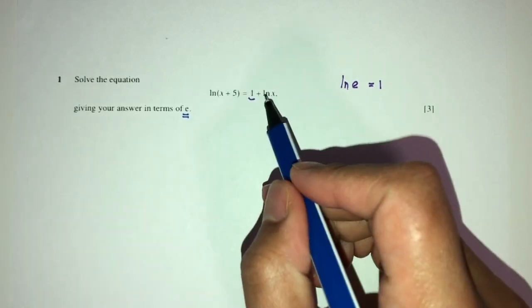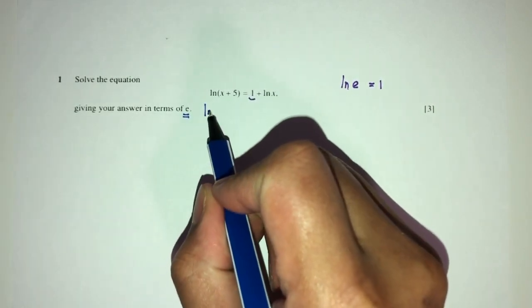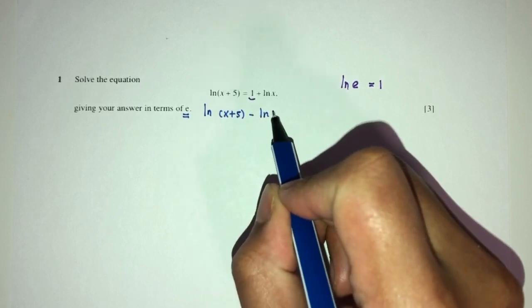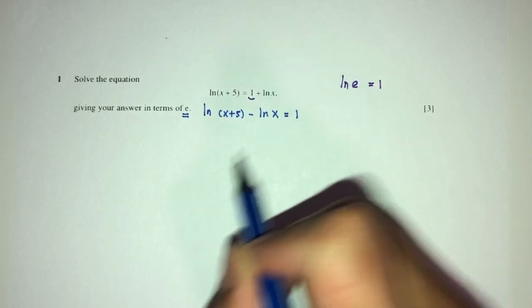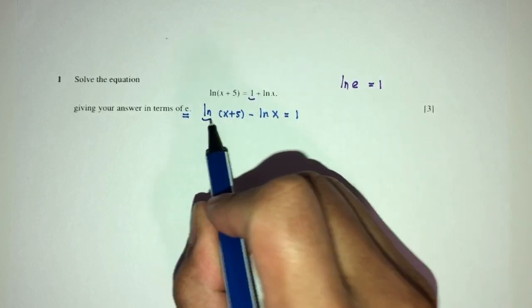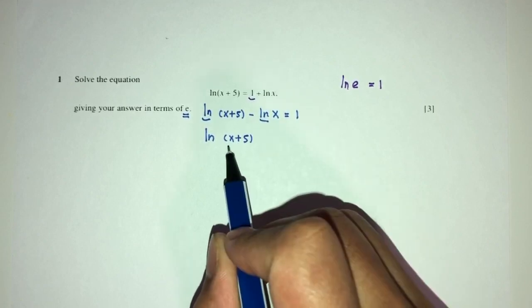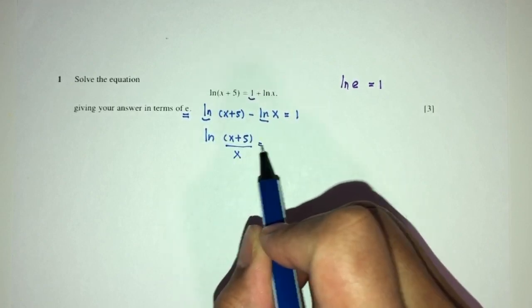So what should we do right now? We should send all the lns to one side. You will have ln(x+5) minus ln(x) is equal to 1. Combine them because they are the same. They'll be ln, here you have (x+5) minus become divided by x is equal to 1.